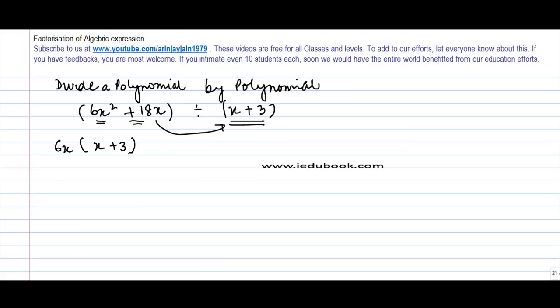So this equation becomes 6x into x plus 3 divided by x plus 3. This would get cancelled with this, so the answer comes as 6x. So division of one polynomial with the other is very easy.